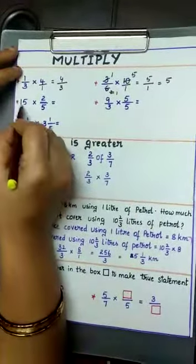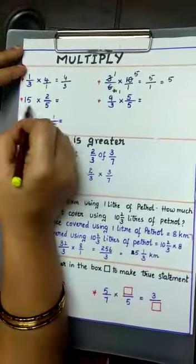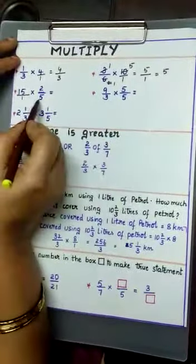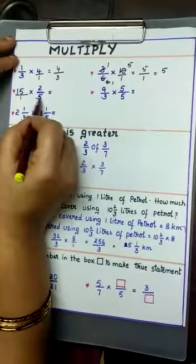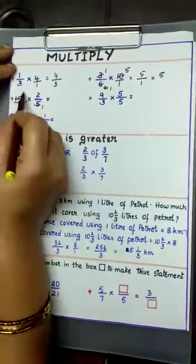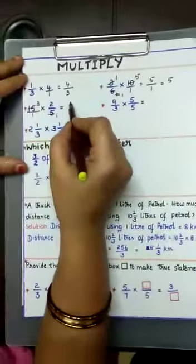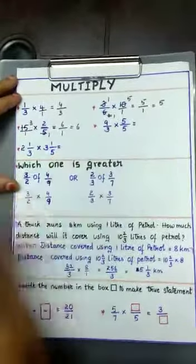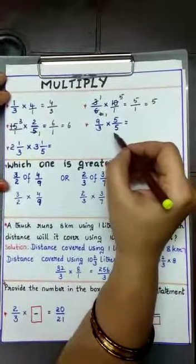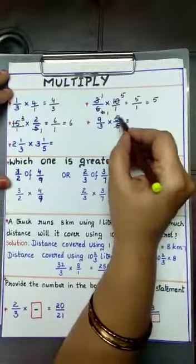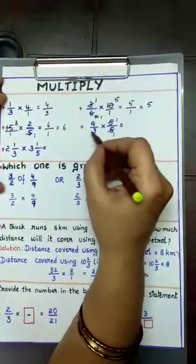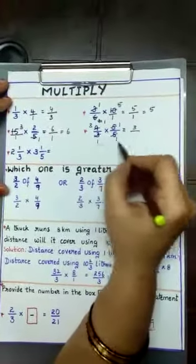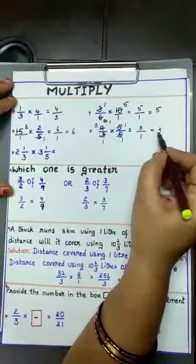Next: 15 into 2/5. Write 15 as 15/1. Since 2 and 5 have no common factor, look at 5 and 15 — common factor 5, giving 1 and 3. So 3 times 2 is 6 by 1 times 1, which is 6. Next problem: 5 and 5 can be cancelled, giving 1 and 1. Then 3 and 3 cancel, giving 1 and 1. So 3 times 1 is 3 by 1, which is 3.